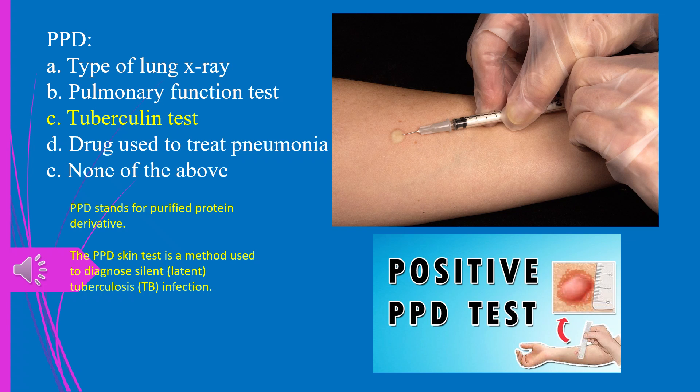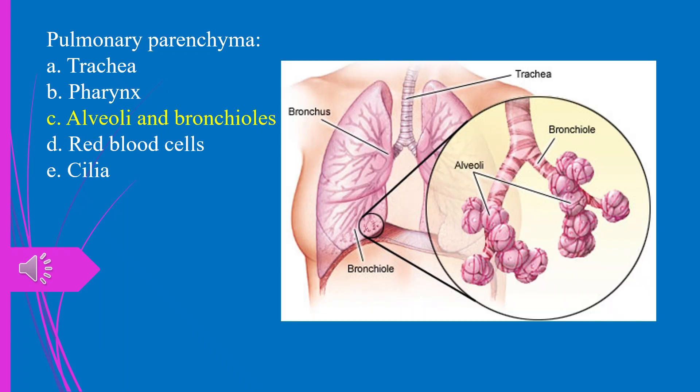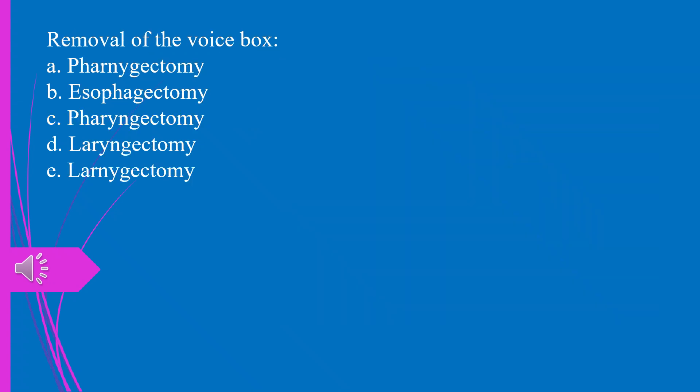PPD stands for purified protein derivative. It's a skin test used to diagnose silent or latent tuberculosis infection. Question 25. Pulmonary parenchyma: a) trachea, b) pharynx, c) alveoli and bronchioles, d) red blood cells, e) cilia. The answer is c, alveoli and bronchioles.